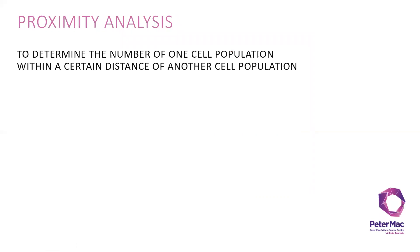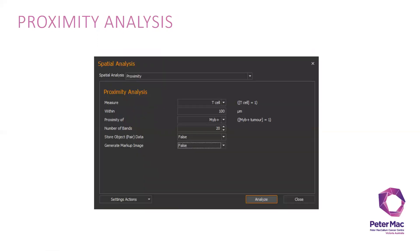For proximity analysis, it's to determine the number of one cell population within a certain distance of another cell population. With this example, I would like to measure T cells within 100 micron proximity of MIB-positive cells with a number of 20 bands, which gives me a 5 micron range.